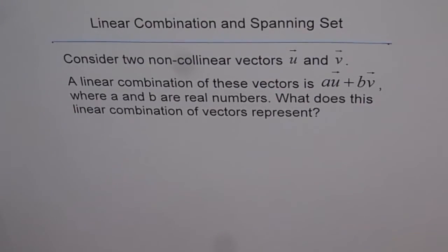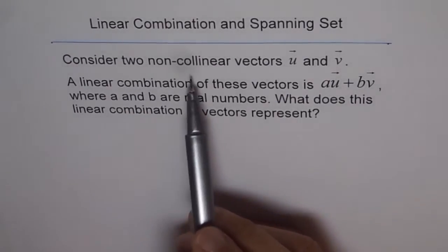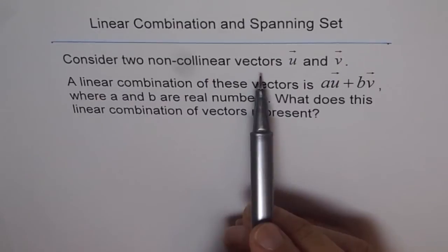Linear combination and spanning set. Let's try to understand these terms. Consider two non-collinear vectors, u and v.